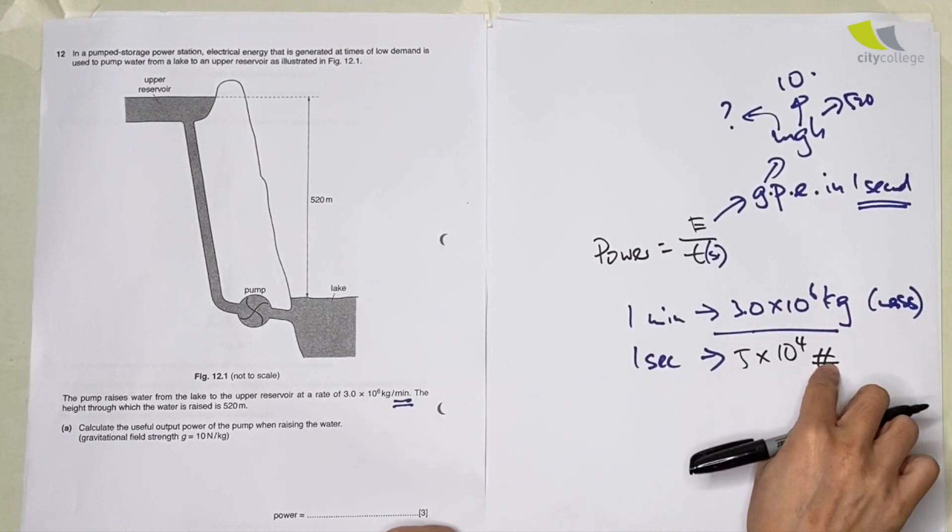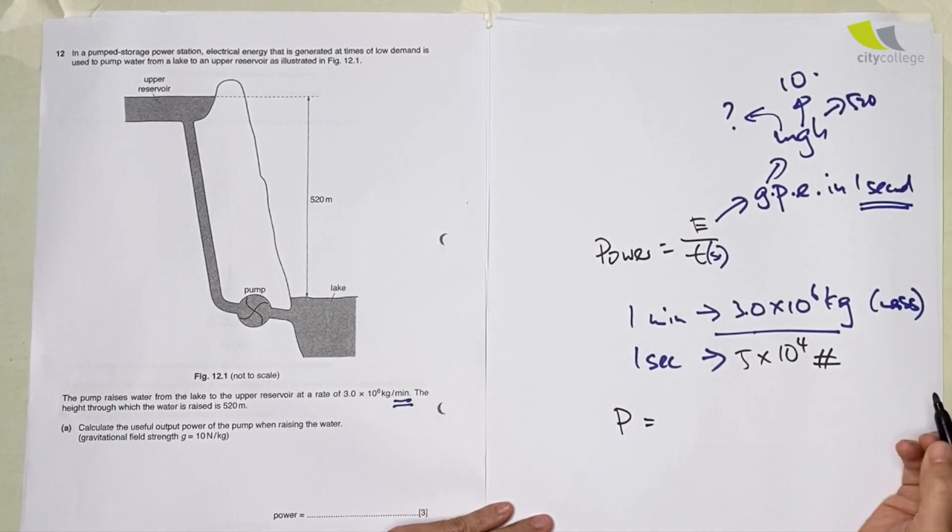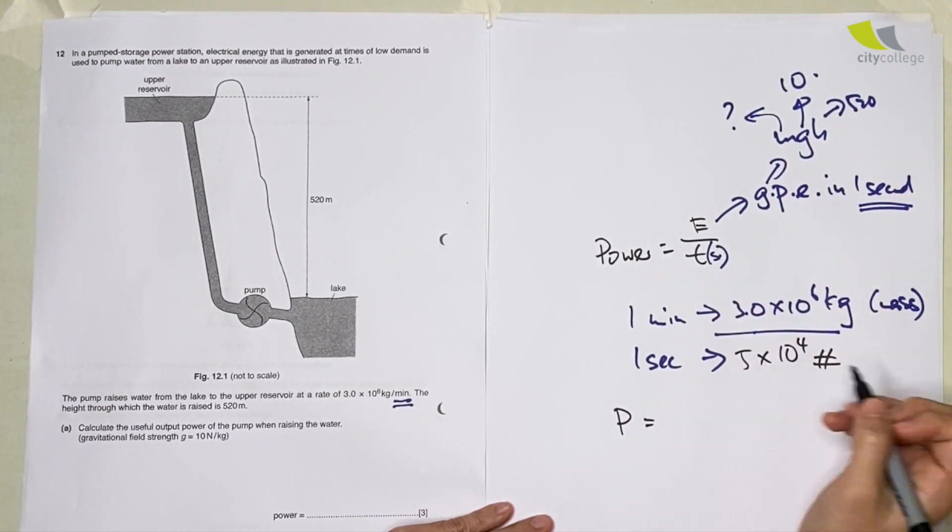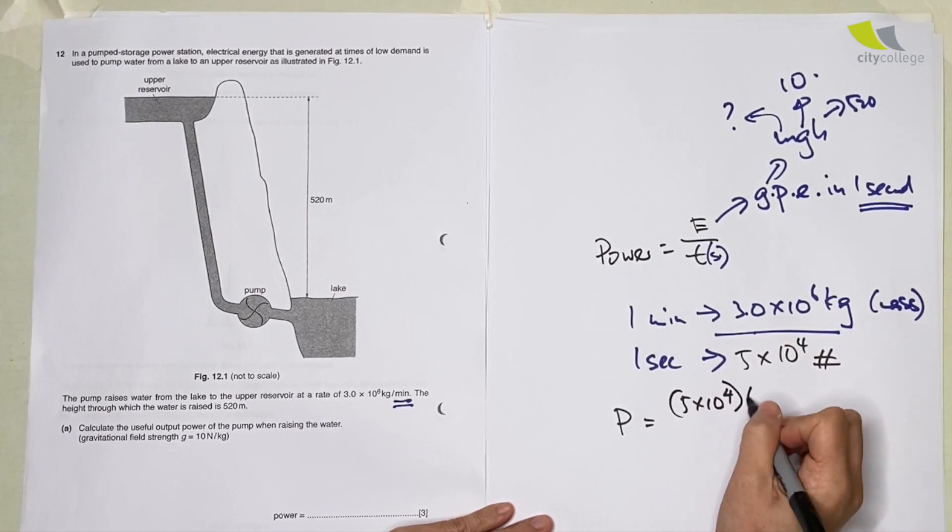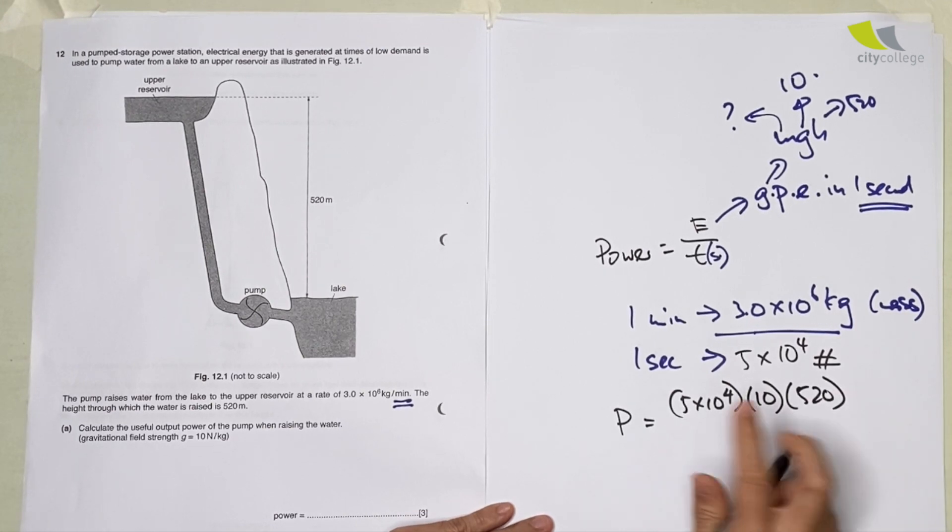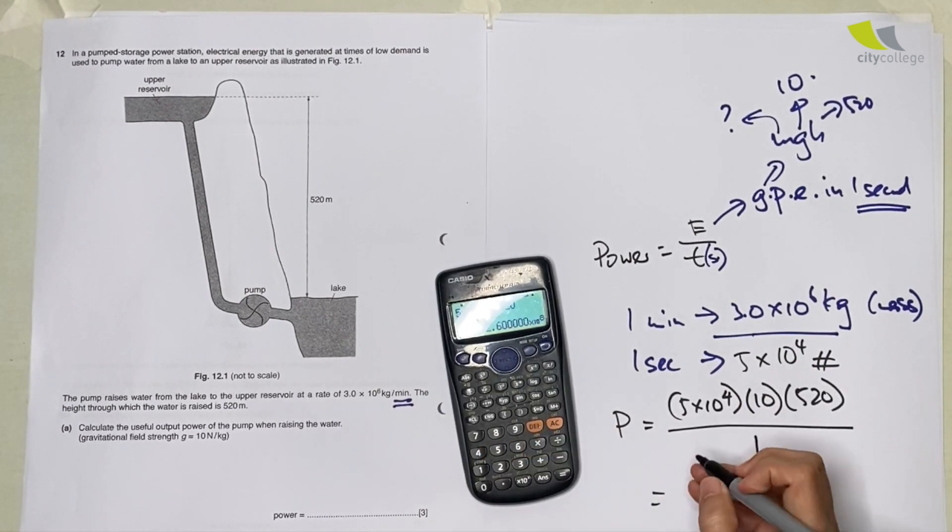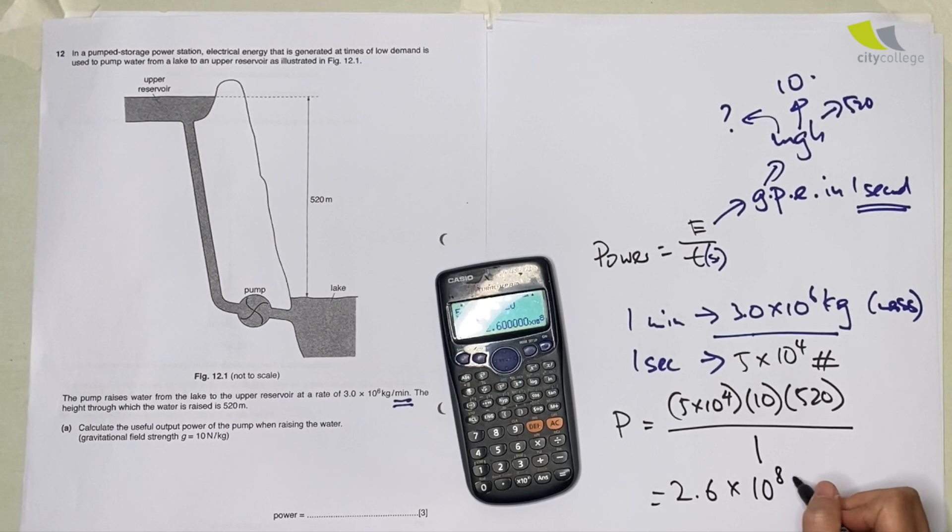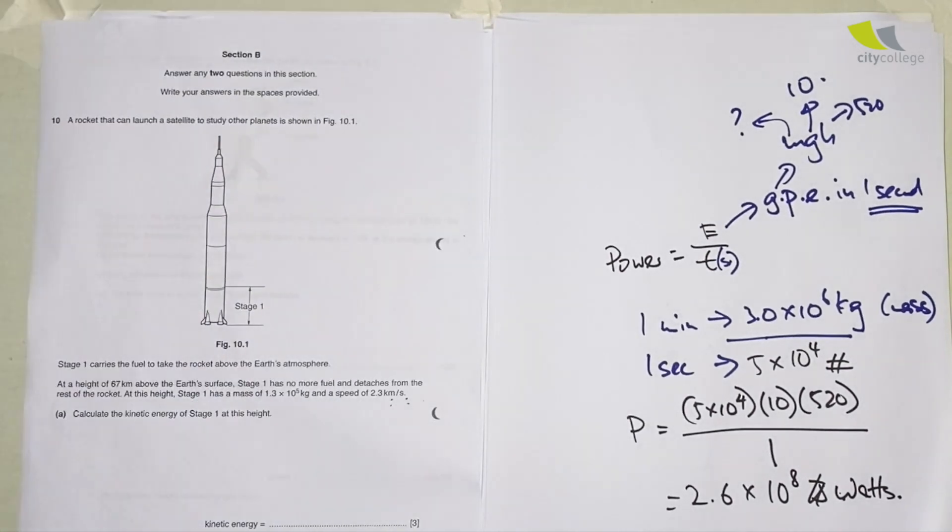Then once I have this, I can actually find my power already. Power is equals to mgh, which is mass 5 times 10 to the power 4 multiply by 10 multiply by 520 and divide by 1 second. Just punch in your calculator, you get 2.6 times 10 to the power 8 watts. Let's move on to the next question.